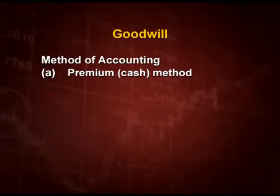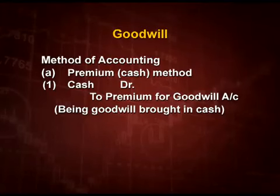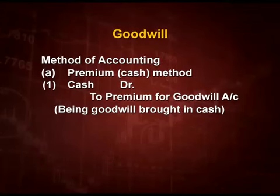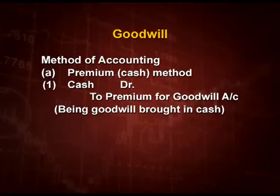Point number one — the first method is the premium method, that is the cash method, when the new partner brings in cash for his share of goodwill. The entry is: cash account debit to premium for goodwill account. Why does the new partner bring in goodwill? In order to compensate the old partners for their past efforts. So the entry is: cash account debit to premium for goodwill account, being goodwill brought in cash.